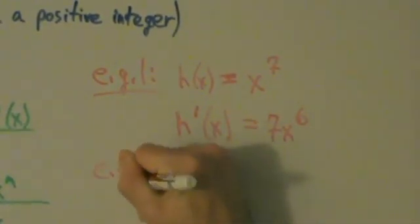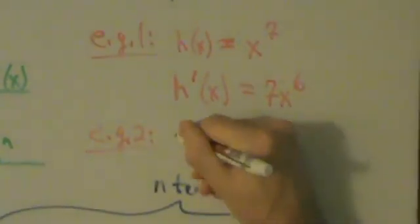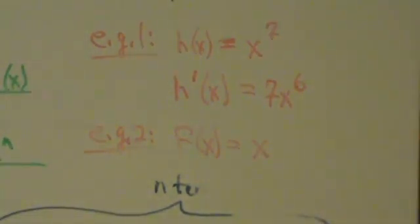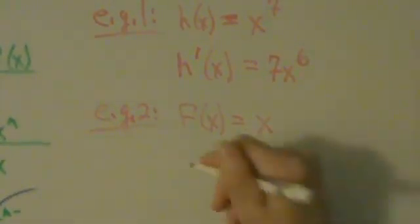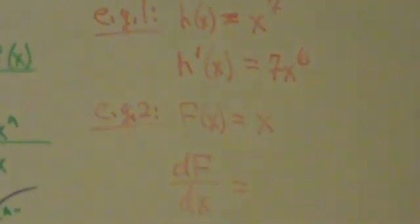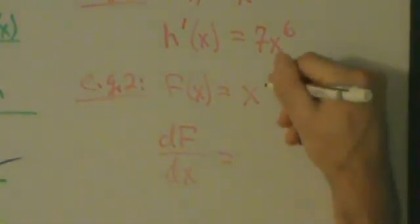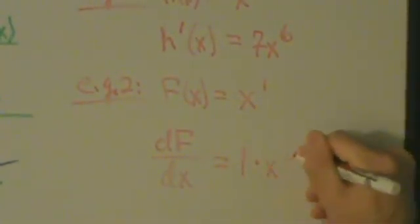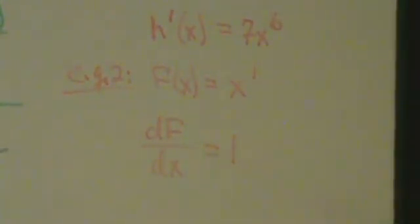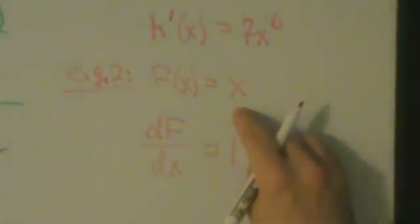Example two: let F of x equal just x. What's the derivative dF dx? Well, x is just x to the first, so the derivative is 1 times x to the 0. But x to the 0 is just 1, so the derivative is actually just 1. The derivative of x with respect to x is 1.